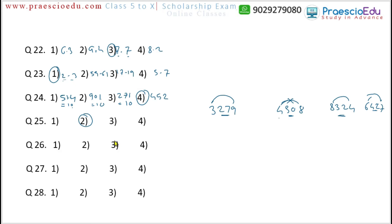Question 26: the options are 71, 53, 69, and 47. Apart from 69, all are prime numbers. 69 is not a prime number, so option 3 (69) is the different one.